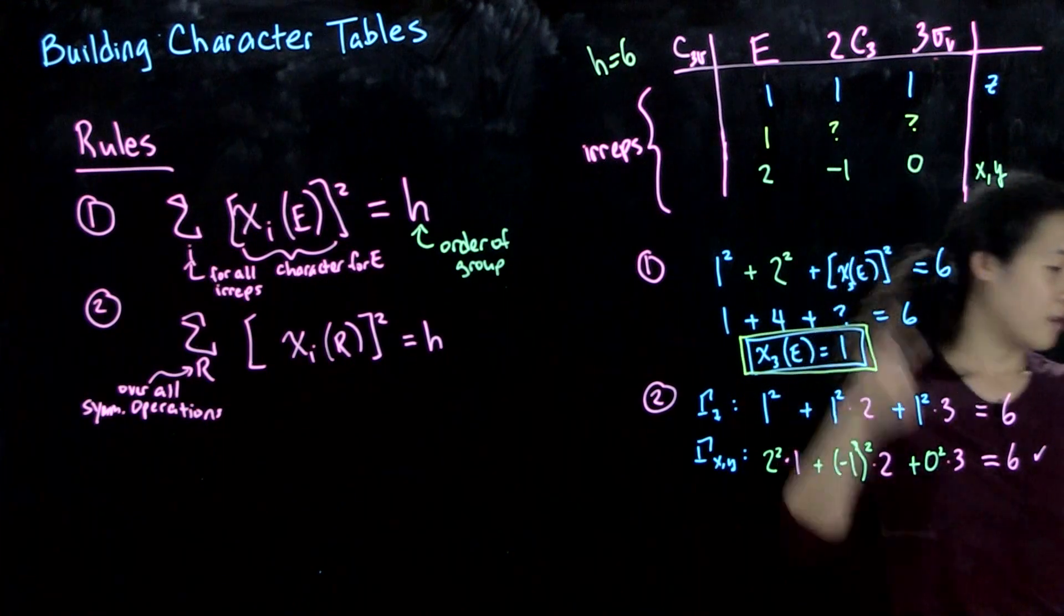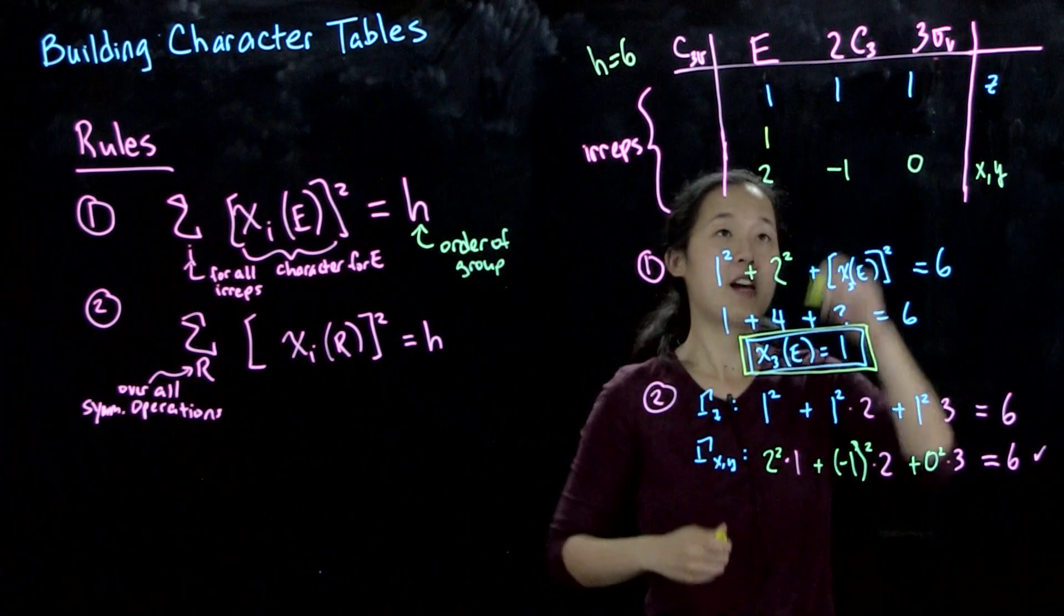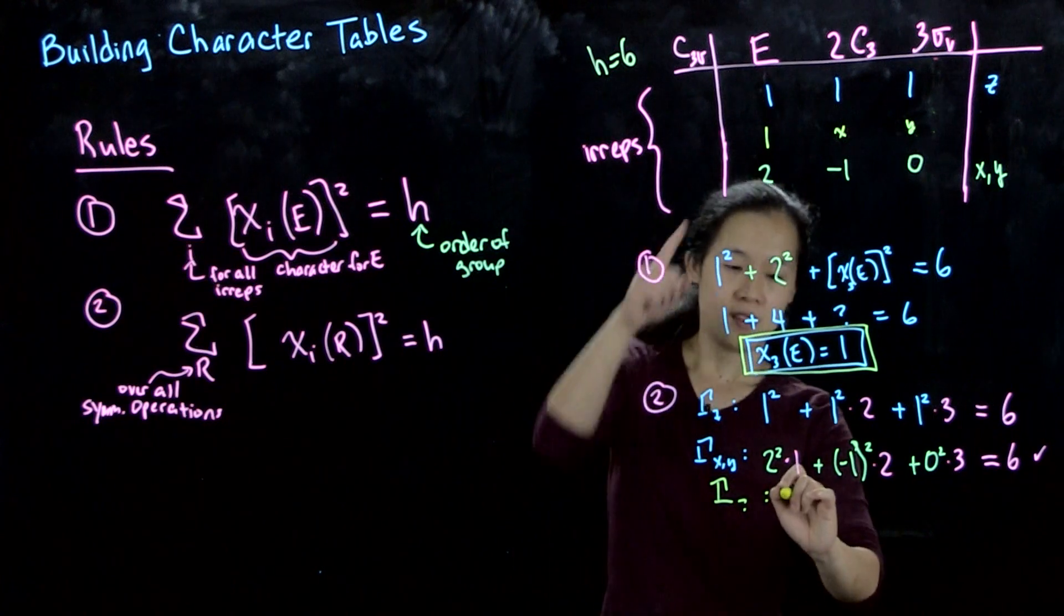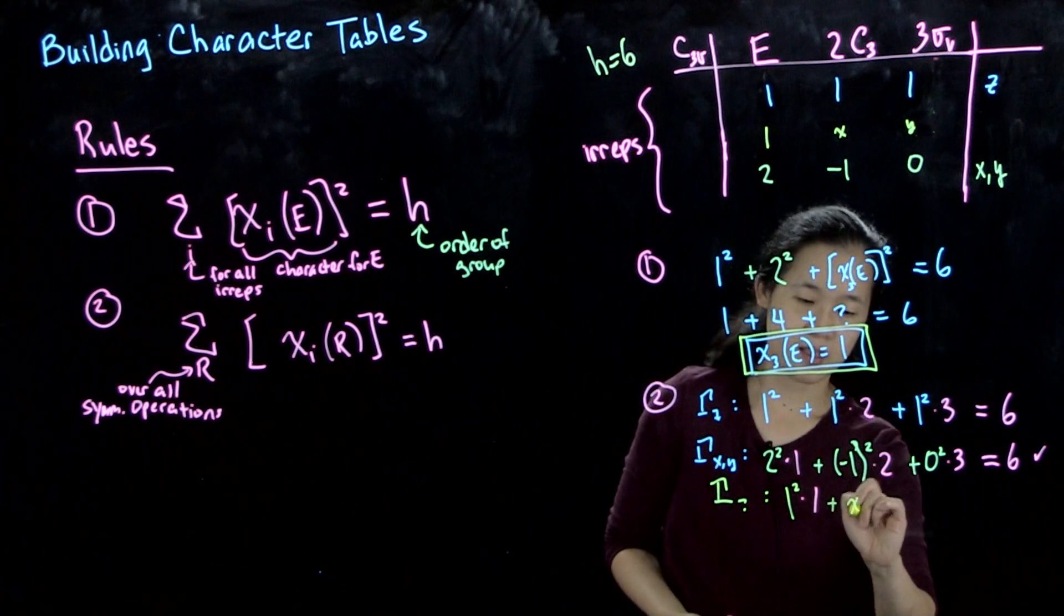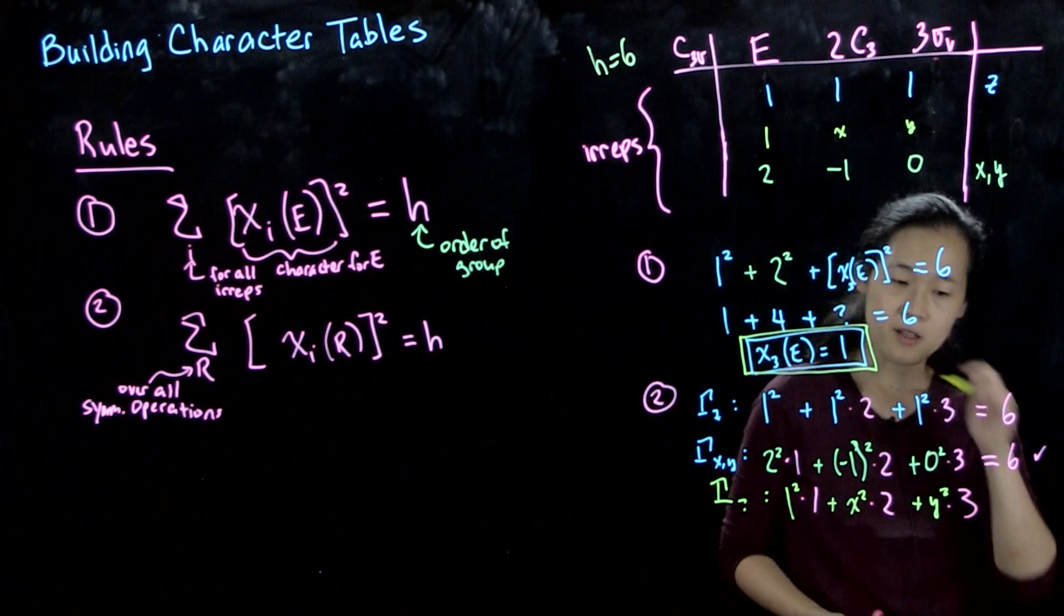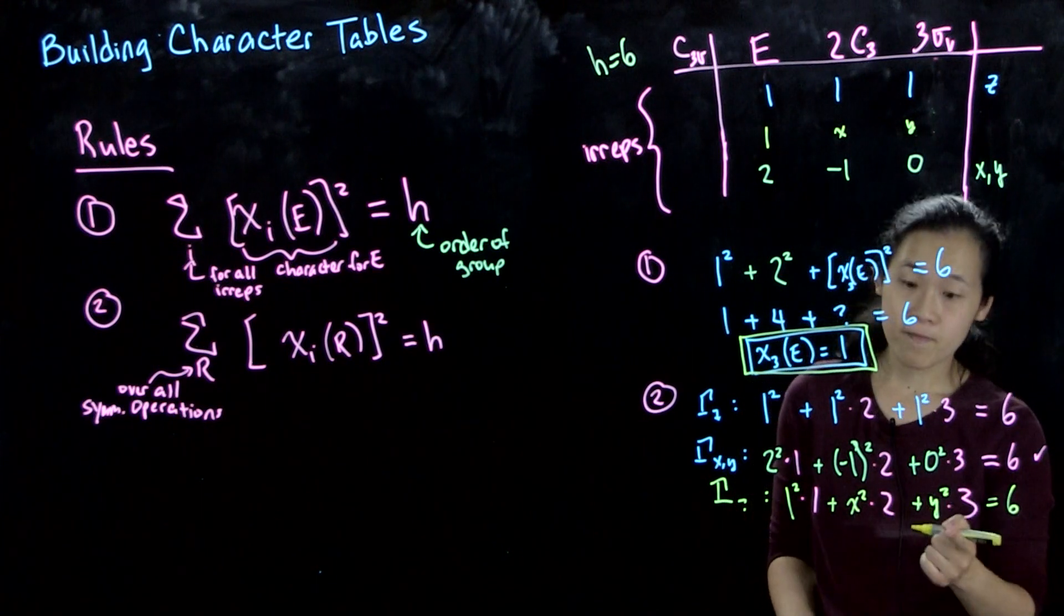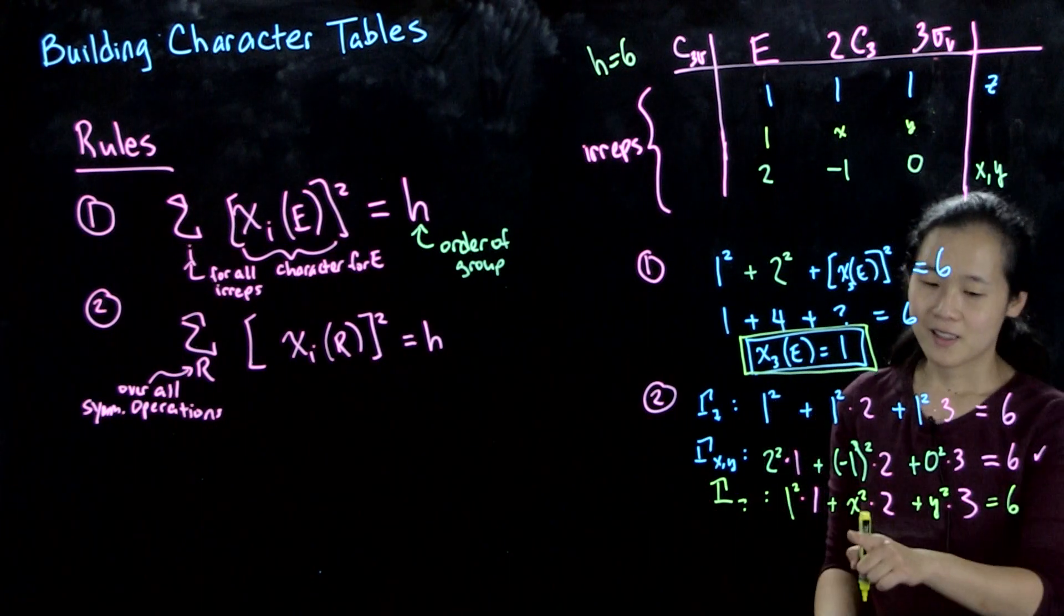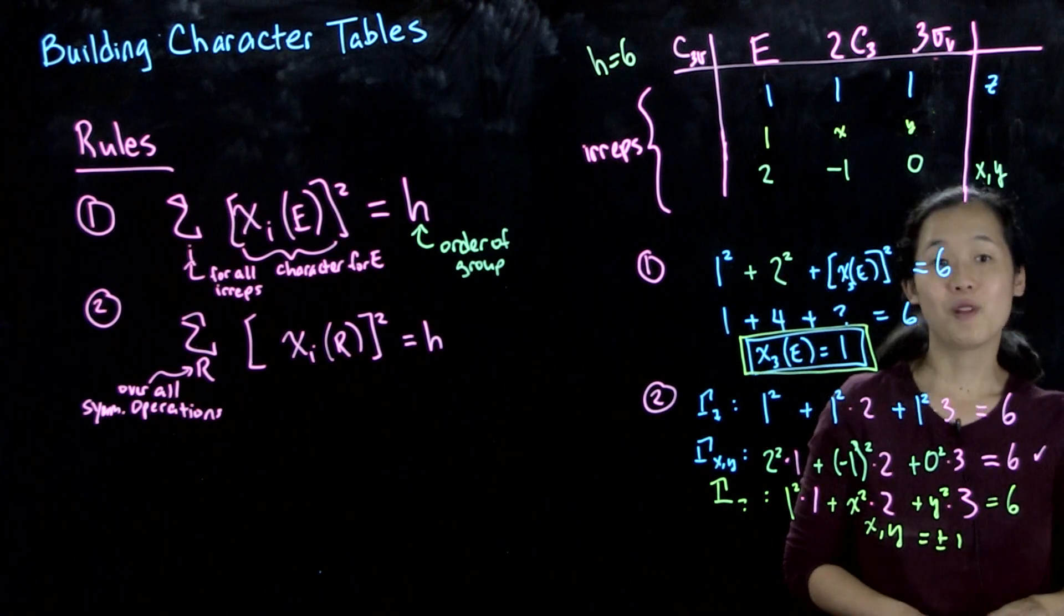So if we start thinking about what's happening here, we have to realize that in our unknowns, we have an x and a y. Let's call this x and y. This is our gamma missing. So what we're saying is that 1 squared times 1, plus x squared times 2, plus y squared times 3, and that's got to be equal to 6. So by that logic, we now know that x squared and y squared both have to be 1. This means that x and y have got to be plus or minus 1.